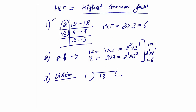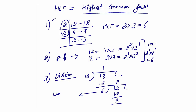The third method is the division method (Euclidean algorithm). For 12 and 18: divide 18 by 12, remainder is 6. Now divide 12 by 6, remainder is 0. The last divisor is 6, so HCF of 12 and 18 is 6. The last divisor at which division completes is always equal to the HCF.